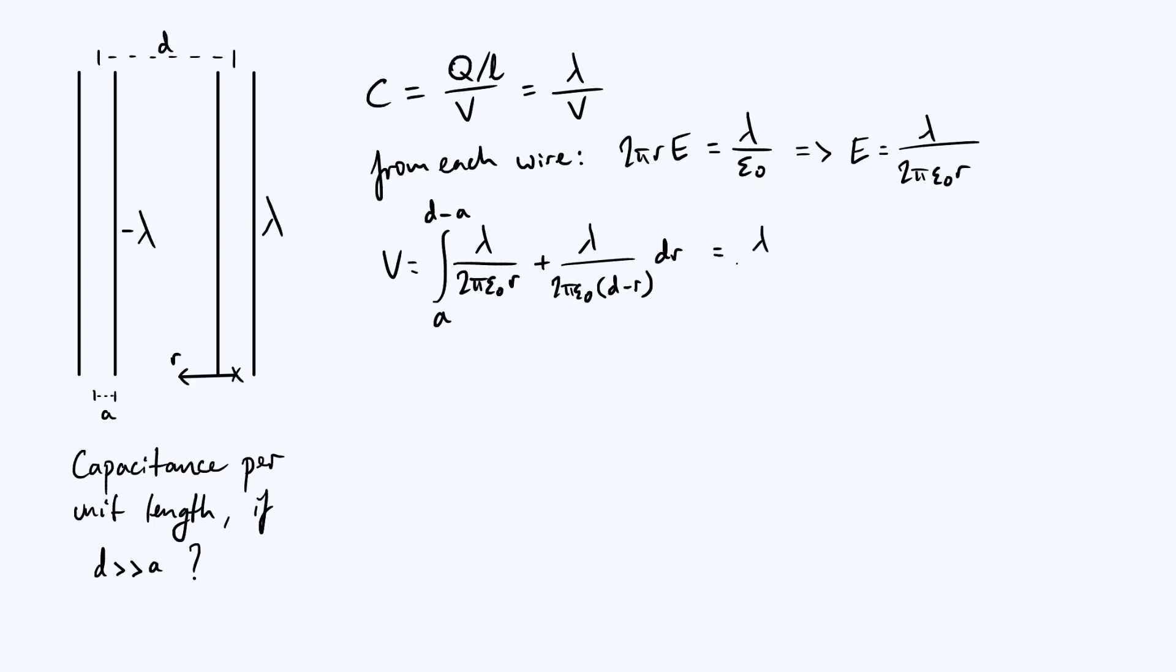We can simplify this by pulling out a constant of lambda over 2 pi epsilon 0, and then the integrand is just 1 over r plus 1 over d minus r with respect to r, keeping our limits there. Each one of those terms integrates in a straightforward way. Let's keep our prefactor lambda over 2 pi epsilon 0. The integral of 1 over r is just natural log of r. r is positive by definition so we don't have to worry about minus signs. Now the 1 over d minus r bit integrates to minus log of d minus r. We need the minus sign here from the chain rule, because if you differentiate log of d minus r you get an extra minus sign from the chain rule because the coefficient of r is negative. So we put this minus sign here from the reverse of the chain rule and put the limits on the end there.